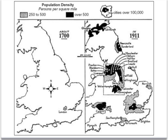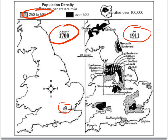Let's look at these two maps to illustrate how much of an impact the Industrial Revolution has on population and geography. In 1700, right at the beginning of the Agricultural Revolution, there's only one city in England — London — with over 100,000 people in it, and the suburbs around it are not so dense, around 250 to 500 people per square mile. By the end of the Industrial Revolution in 1911, look at how many cities we have with over 100,000 people — dozens of cities.